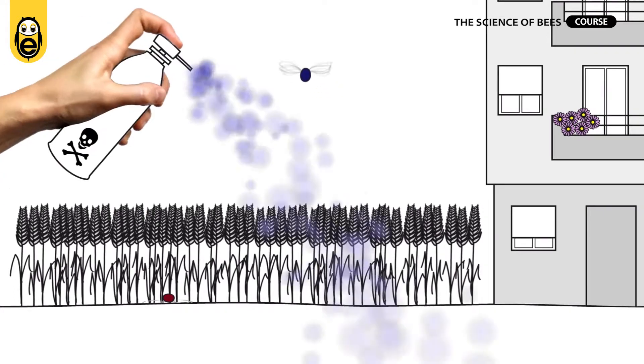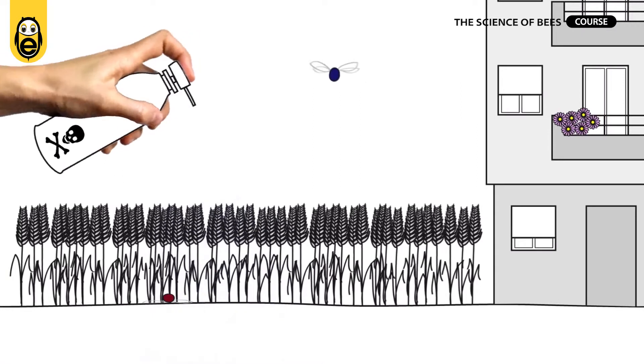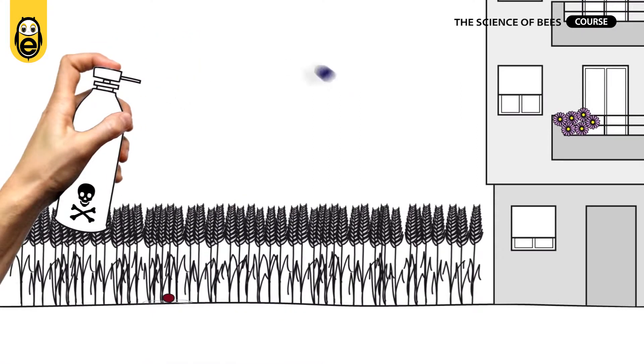On top of this, we use pesticides on our crops, intoxicating the few species that can adapt to them.